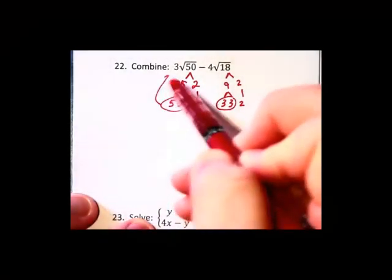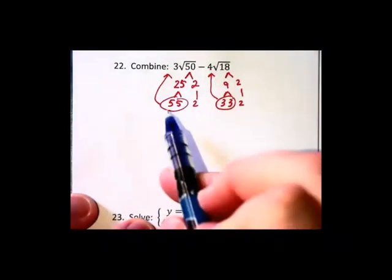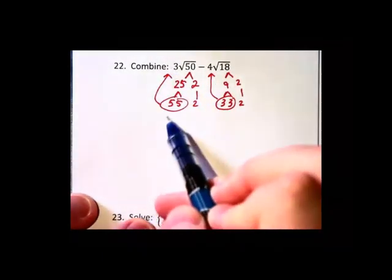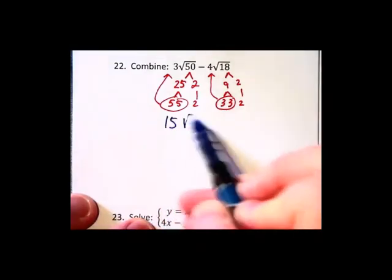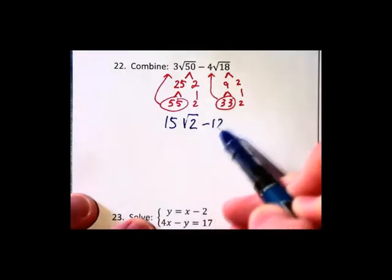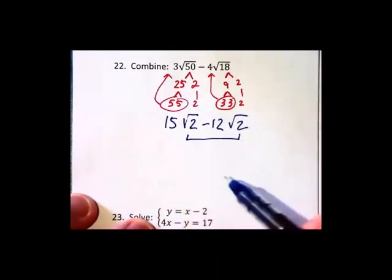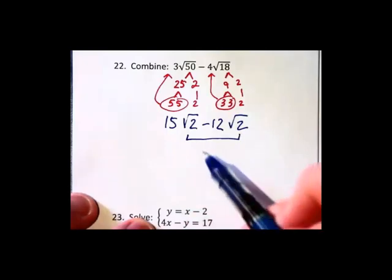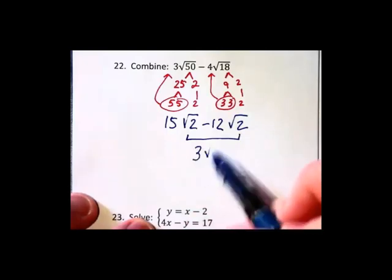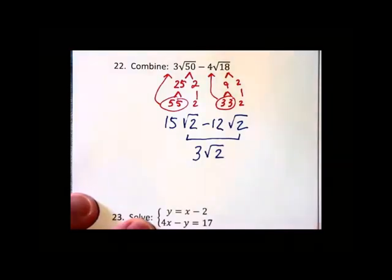When these numbers come out they multiply with the coefficient in front. So 5 will multiply with 3 making 15 times the root 2, and then the 3 will multiply with the negative 4 making minus 12 root 2. And now we can add these together because they both have a root 2 within, and we can subtract and get 3 root 2.